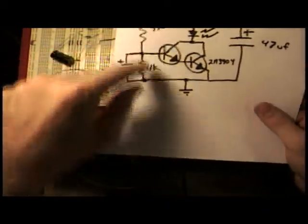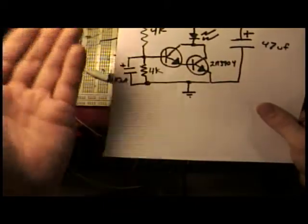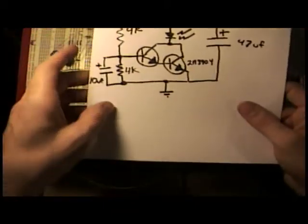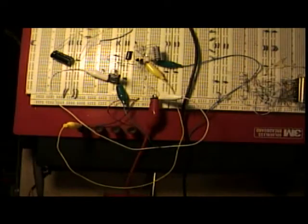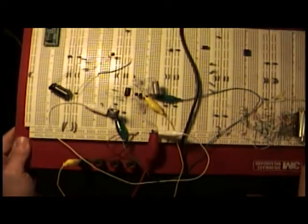You can adjust these different values for how slow and how fast you want the LED to turn on and off. Here's an example circuit that I put together on the prototype board.